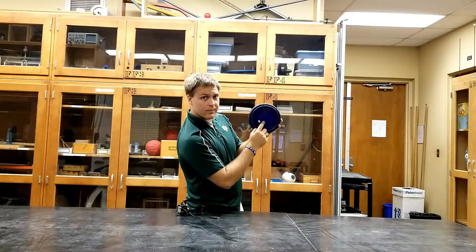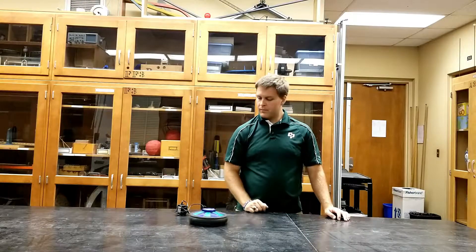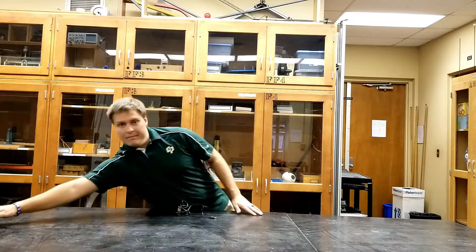The on-off switch is also located on the bottom of the Hover Puck. Turn it on and when you give it a push on a flat surface it'll travel at constant velocity.